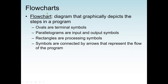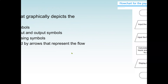The next tool is a flowchart — a diagram that graphically shows the steps in a program. We have symbols: ovals are terminal symbols, parallelograms are input or output symbols, and rectangles are processing symbols. These symbols are connected by arrows representing the flow of the program. Execution normally takes place from top to bottom, so most arrows go downward. If there's a loop or decision, the arrow can go up or circle around.